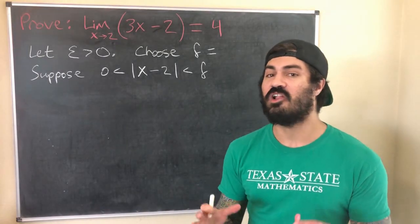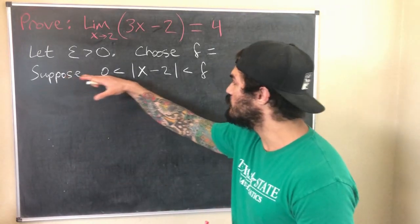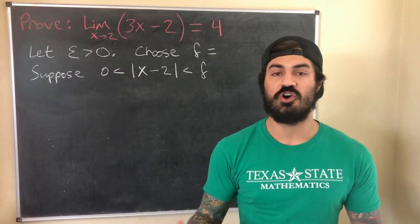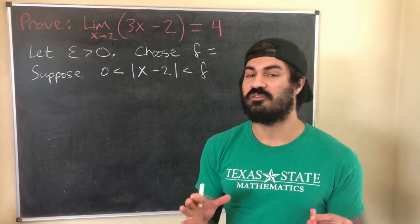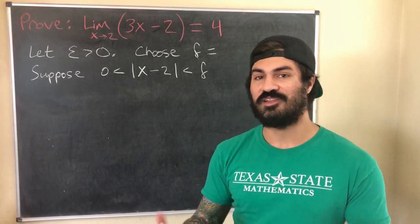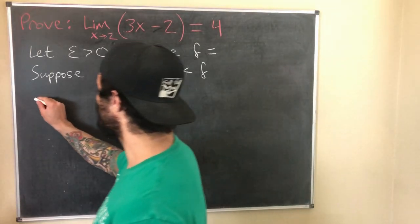Is less than delta. So we're going to assume this. And then what we're going to do is we're going to take that f(x) minus L expression and see if we can use this assumption to show that that absolute value of f(x) minus L is in fact less than epsilon. So from here we're going to go: then...